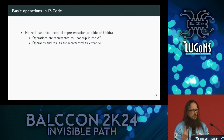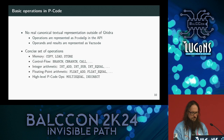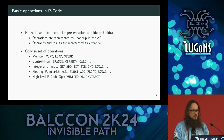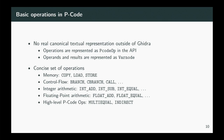The two main building blocks are the P-code op — the actual operation — and the var node, which represents operands. The operations include typical memory operations like load and store, copies (move), branching, call instructions, conditional branches, integer arithmetic, and floating point arithmetic. Then there are high-level P-code operations like MULTIEQUAL or INDIRECT that are only introduced through program transformations.